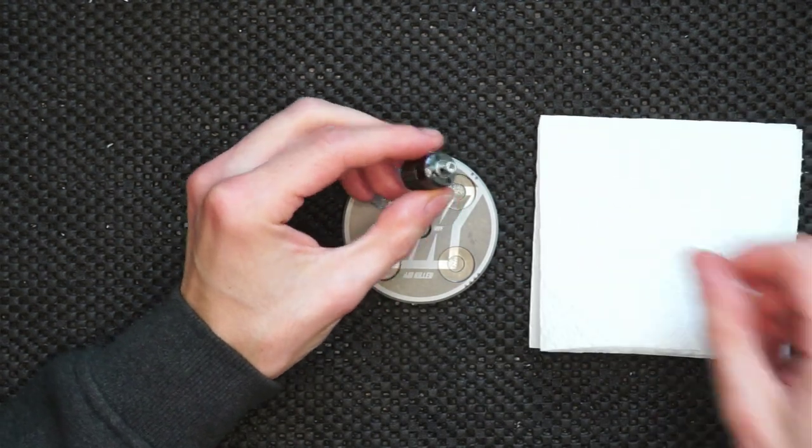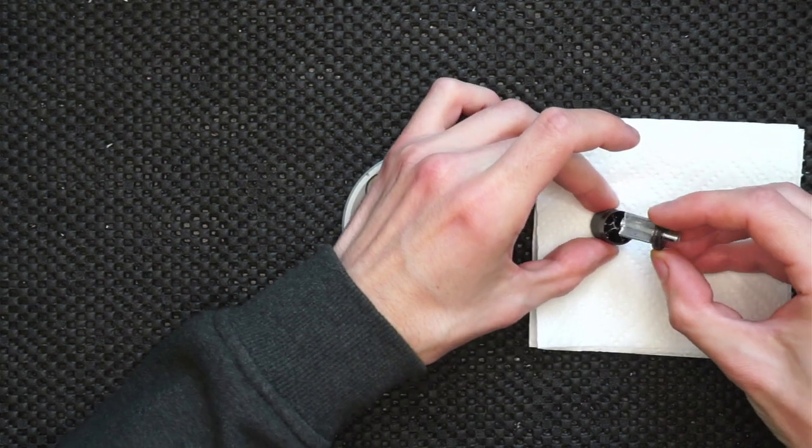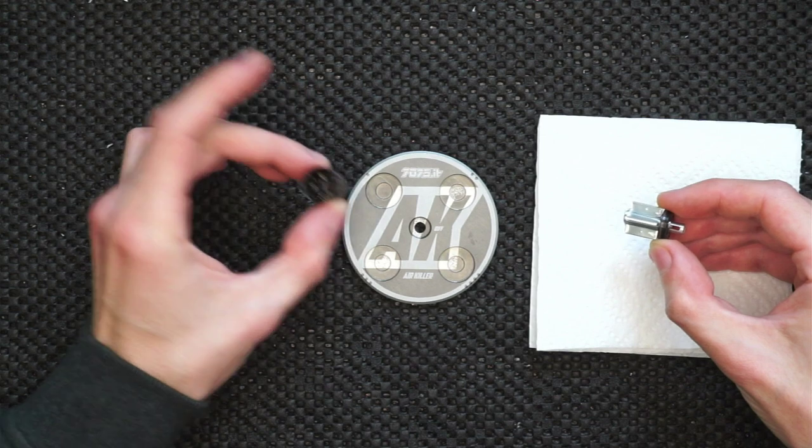Grab some paper tissue and lay down all the parts. I like to save a maximum of oil because this oil, as you can see, is still clear so it's okay to reuse it.